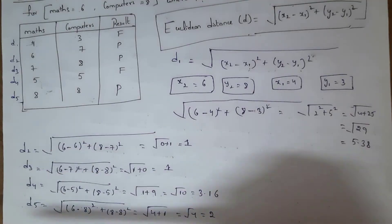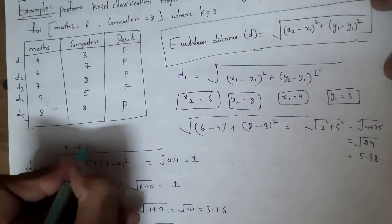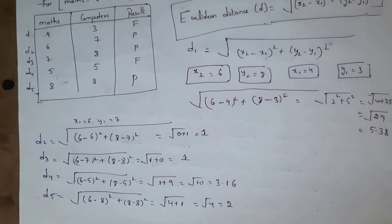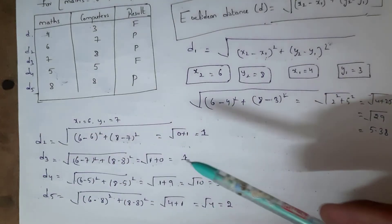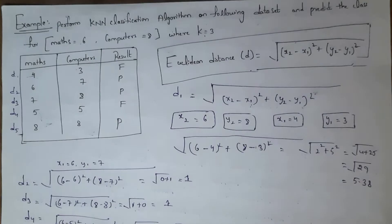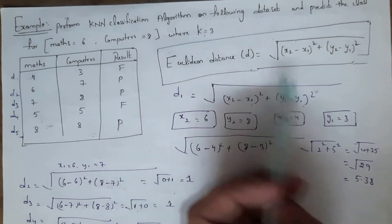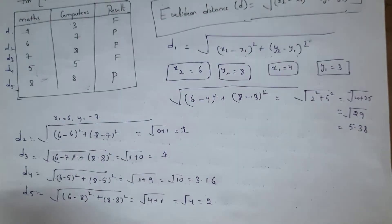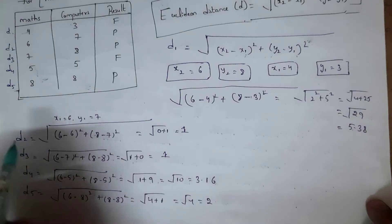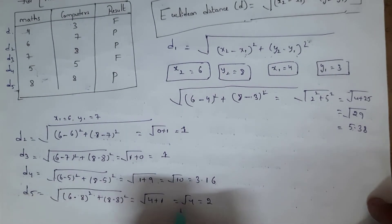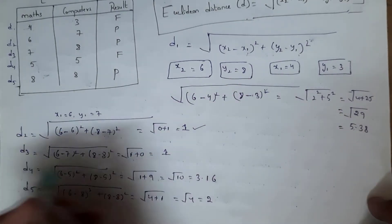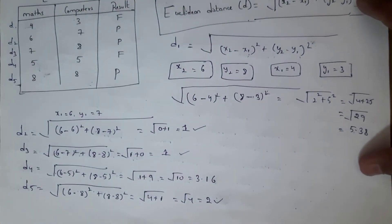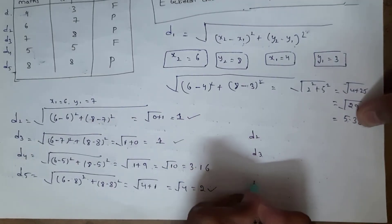Similarly, for D2 (x1=6, y1=7), distance = 1. For D3, distance = 1. For D4, distance = 3.16. For D5, distance = 2. Since k = 3, we select the three smallest distances: D2 = 1 (smallest), D3 = 1, and D5 = 2. These are the three nearest neighbors.